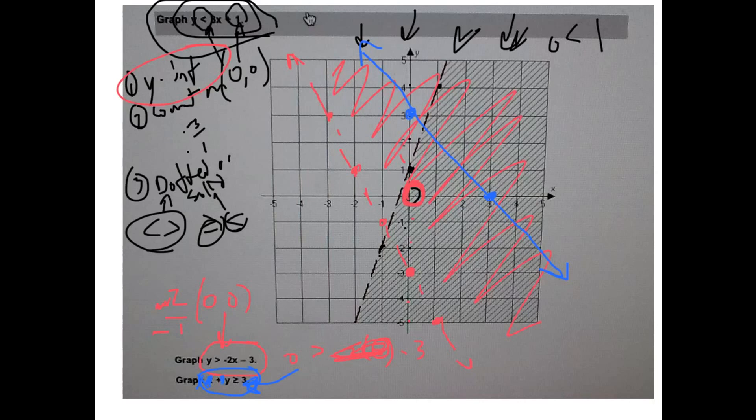Now let's just plug our stuff in and see if we shade above or below. Again I'm going to use zero zero, so that means zero plus zero is greater than or equal to three. Is that true? Is zero greater than or equal to three? No it's not. Therefore you don't include the origin which we chose and you shade above it.